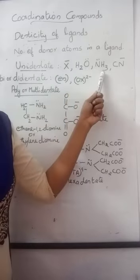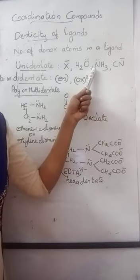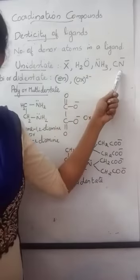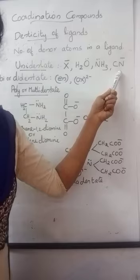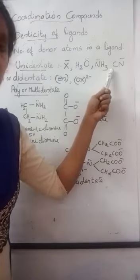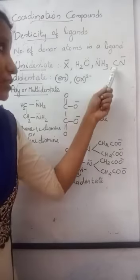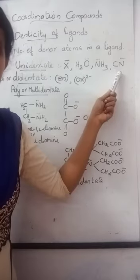Ammonia. In ammonia, the donor atom is nitrogen containing a lone pair. Cyanide ion is bonded to the central metal atom through either carbon or nitrogen. This is also an example of unidentate ligand.